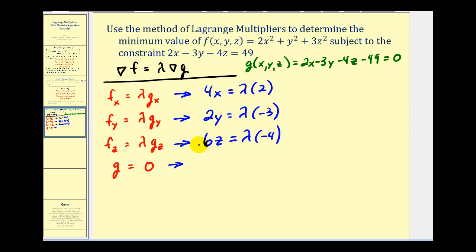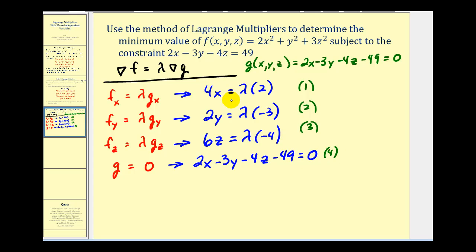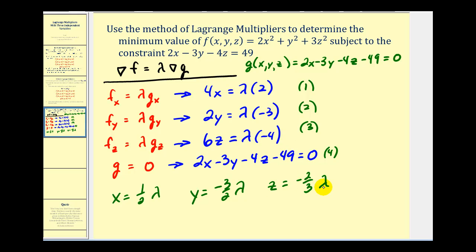And then our constraint is the fourth equation. This will be equation one, equation two, equation three, and equation four. So what we'll do here is solve equations one, two, and three for x, y, and z, and then perform substitution into equation four. For equation one, if we divide both sides by four, we would have x equals one-half lambda. In equation two, if we divide both sides by two, we would have y equals negative three-halves lambda. And then for equation three, if we divide both sides by six, we would have z equals negative two-thirds lambda.